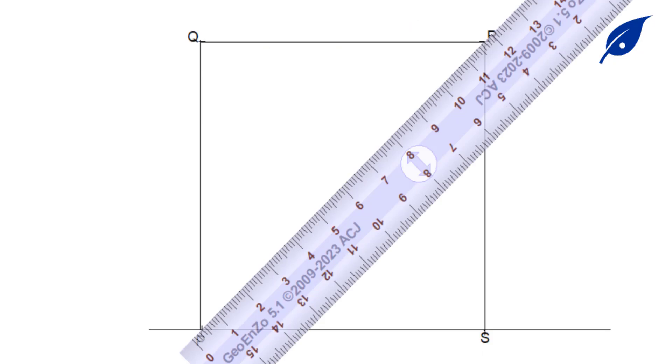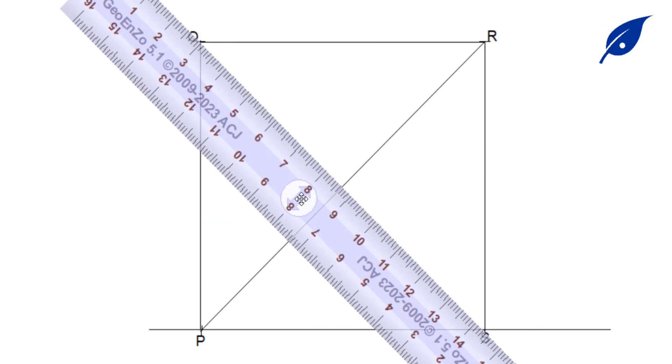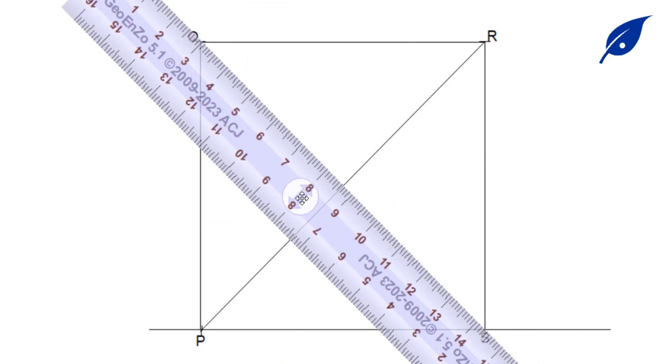From P to R we draw a diagonal, and also from Q to S we draw a diagonal.